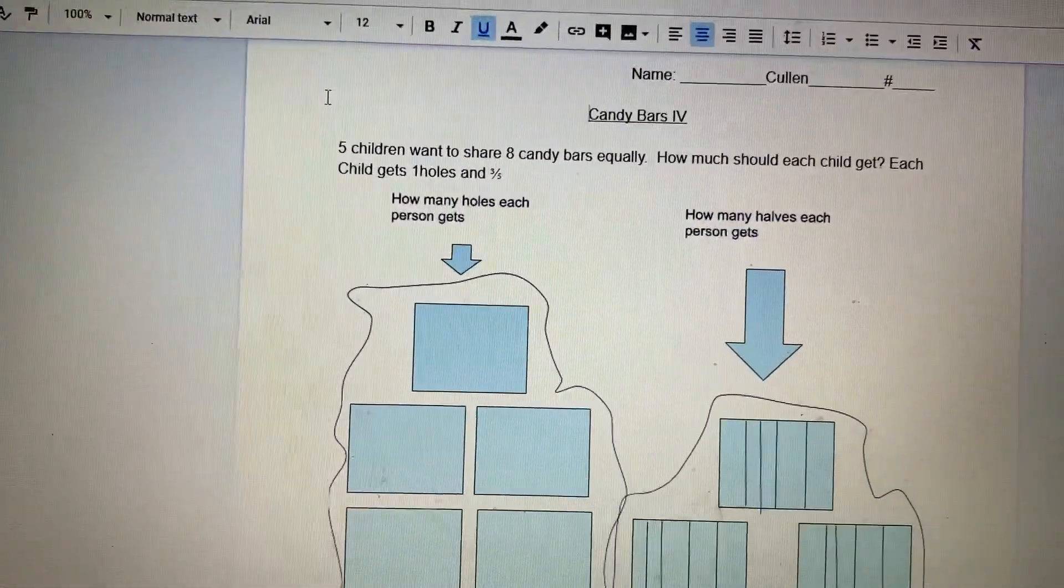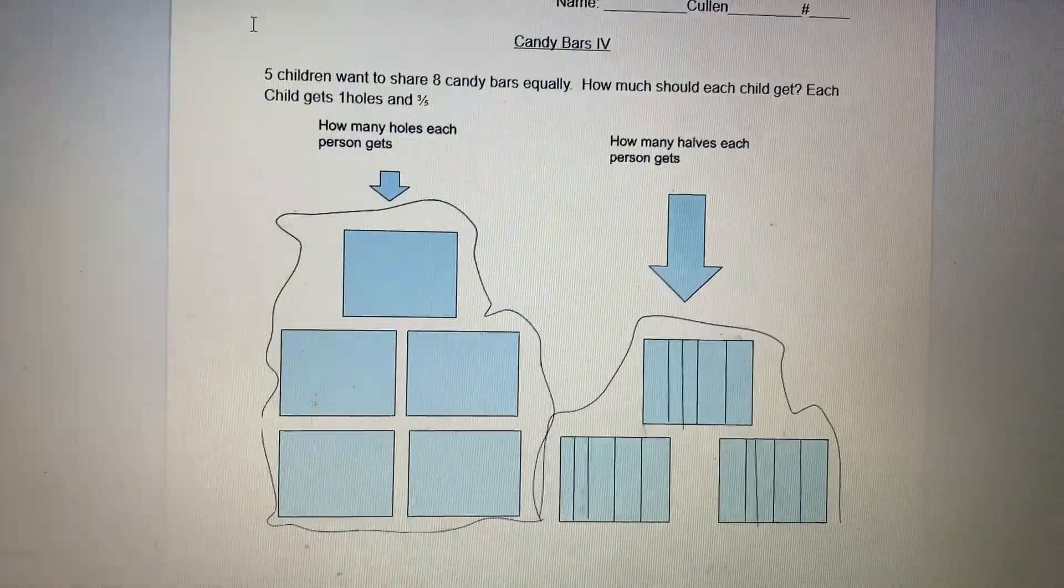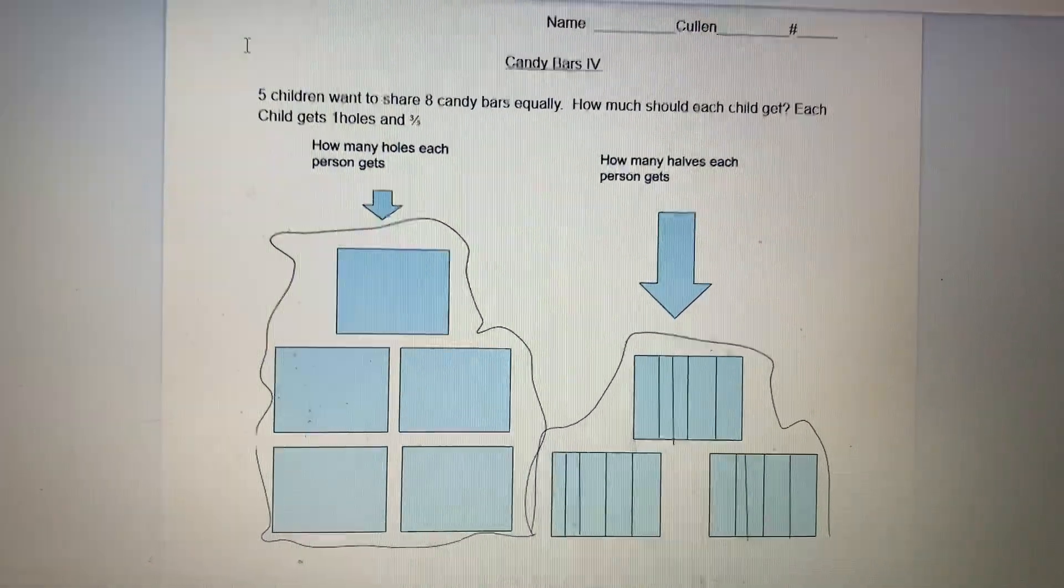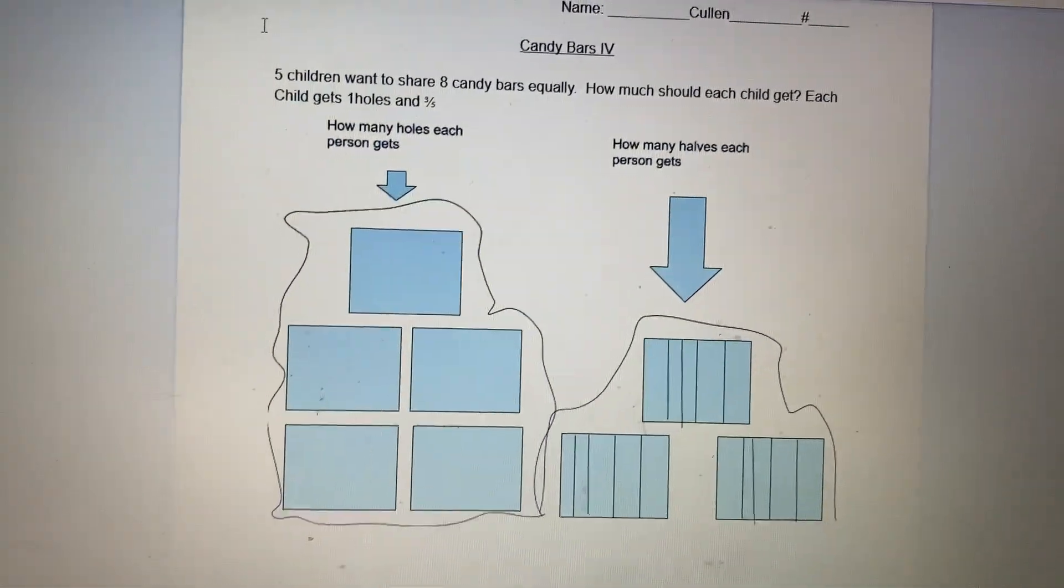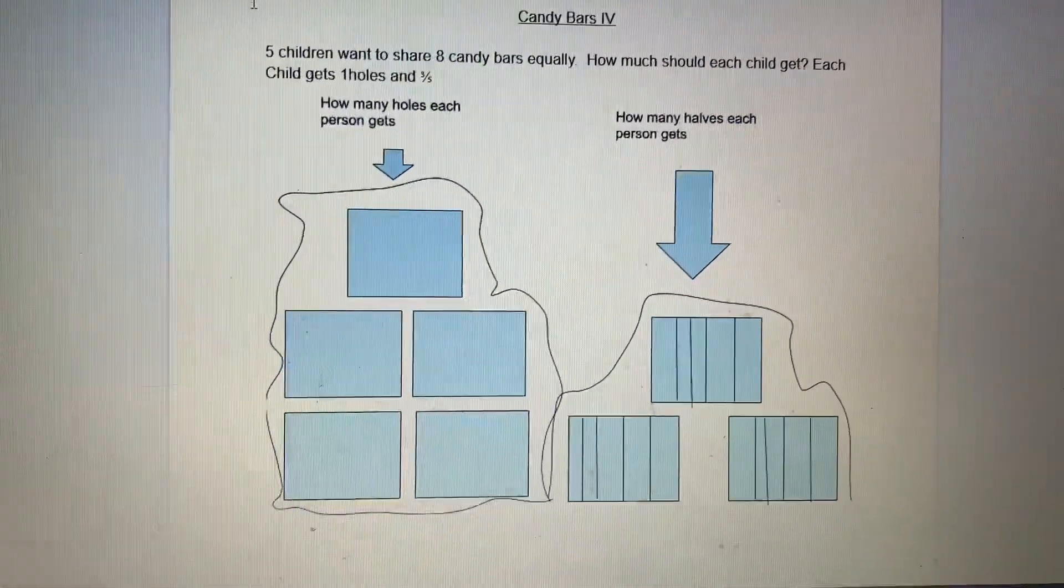Today, your problem is five children want to share eight candy bars equally. How much should each child get? Tell us what you did. I see that you used Google Drawings as a tool to help you solve the answer. Tell us what you did.